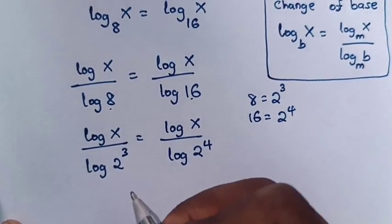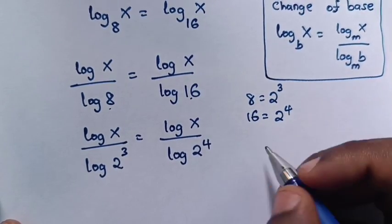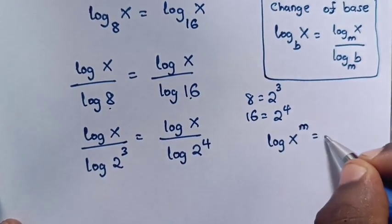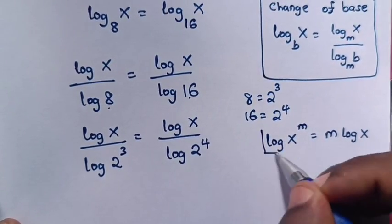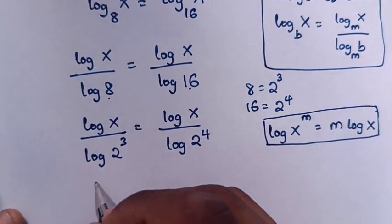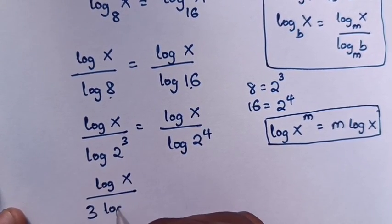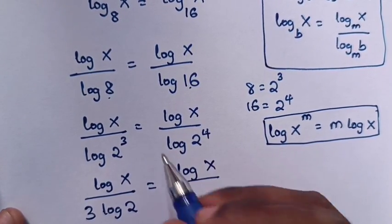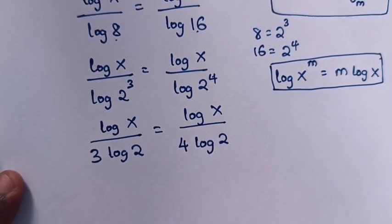Then from here, in the denominator we have log 2 power 3 and log 2 power 4. We will apply the log rule that log x power m is equals to m log x, so the exponent moves to the front. In our equation it will be log x over 3 log 2 is equals to log x over 4 log 2.